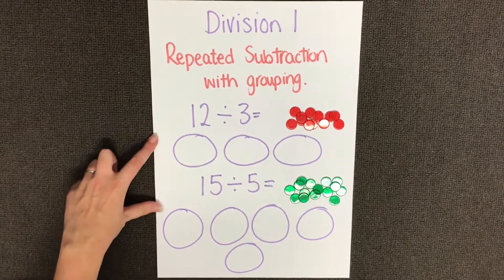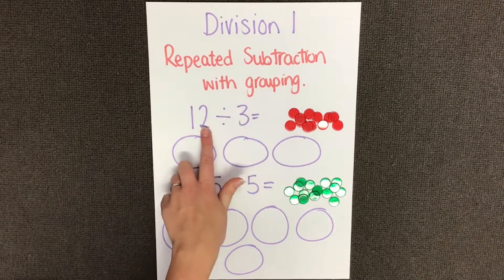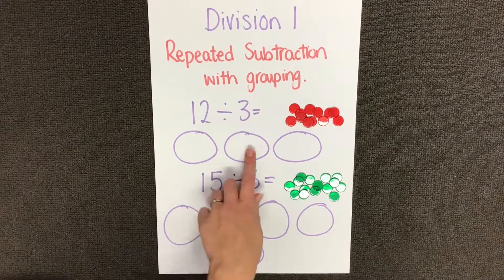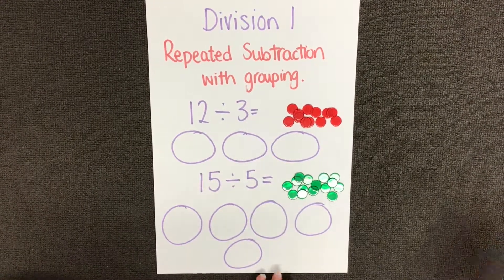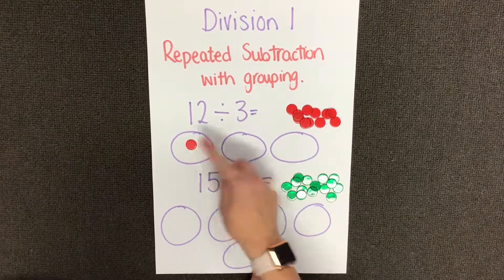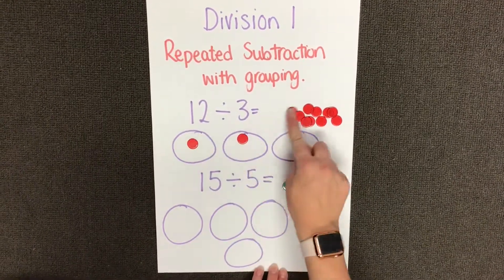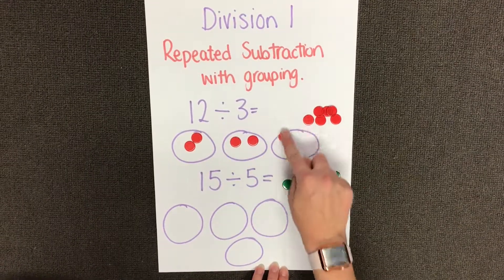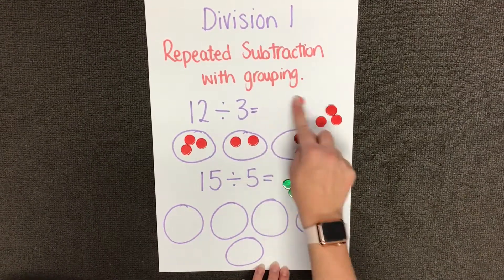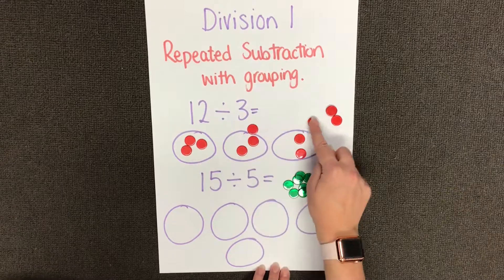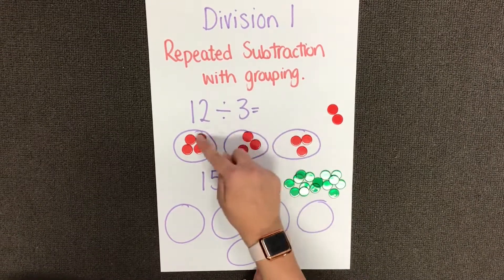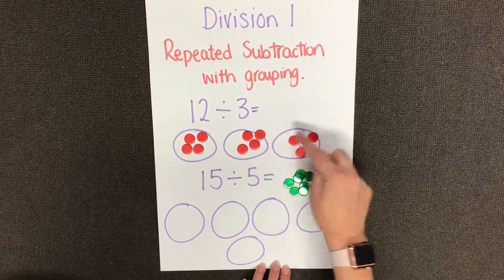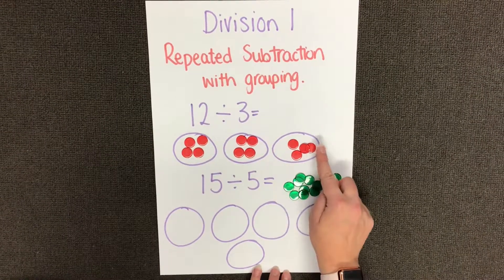In this question we need to divide our 12 into three groups. So here I have my three groups and I have my 12 counters, and I'm going to share my 12 counters equally into my three groups, making sure they go in one in each group at a time. And finally we count up how many are in each group.